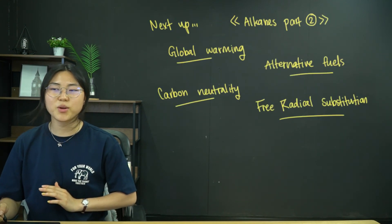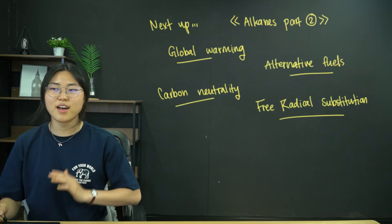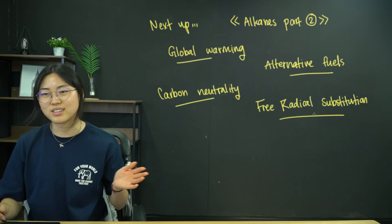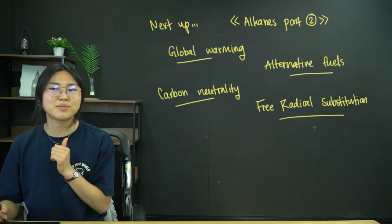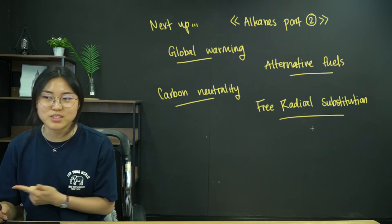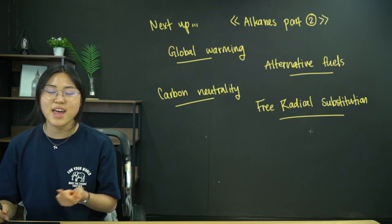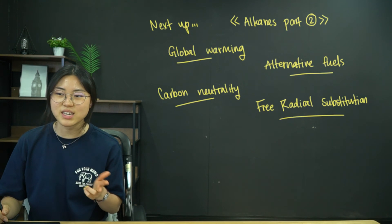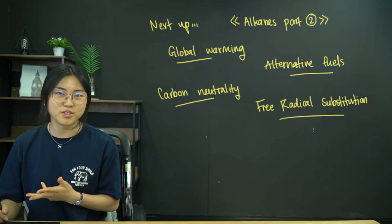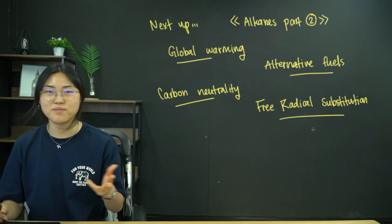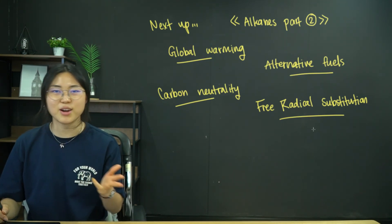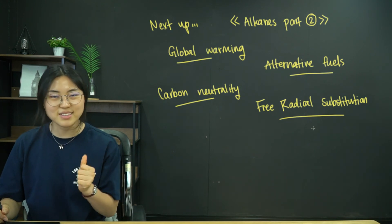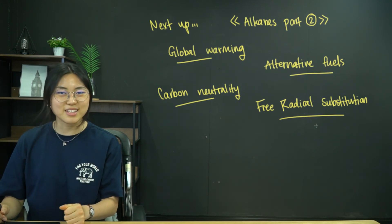Those were the pollutants and why they are problematic: carbon monoxide, nitrogen oxides, and sulfur dioxide. Next up we're going to have alkanes part 2, where we discuss global warming, alternative fuels, carbon neutrality, and free radical substitution, which involves curly arrows. See you in the next video.